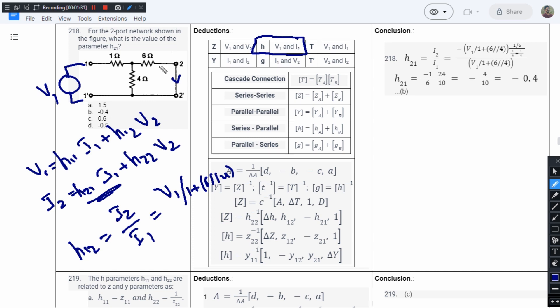Now we will have to apply the current division rule. From current division rule we know this total current will be multiplied with the admittance 1 by 6 divided by sum of admittances 1 by 4 plus 1 by 6. Now this is the value of I2.